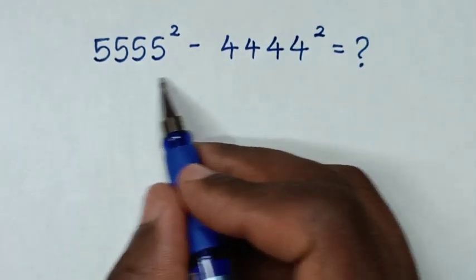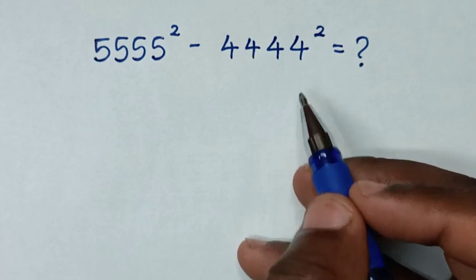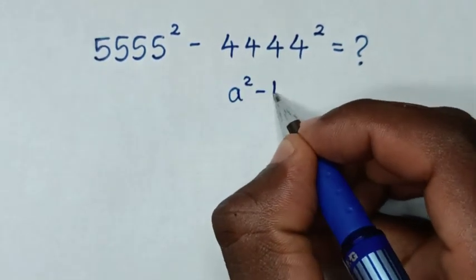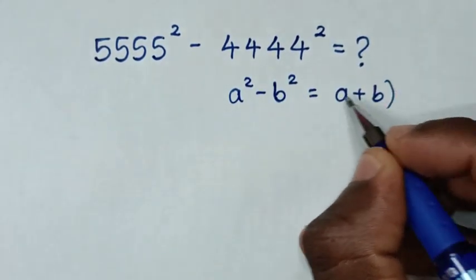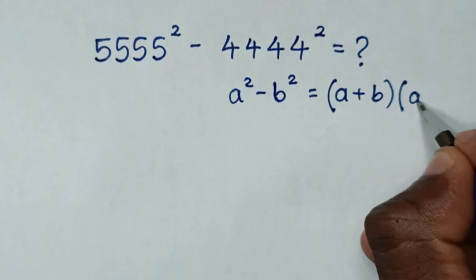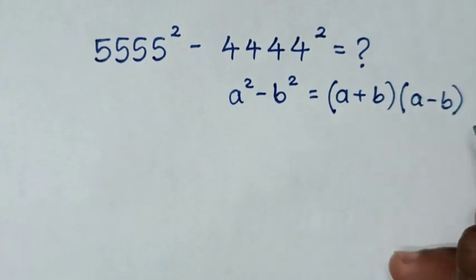From this expression, it's in the form of a perfect square, so we'll apply the rule: a² - b² equals (a+b)(a-b).